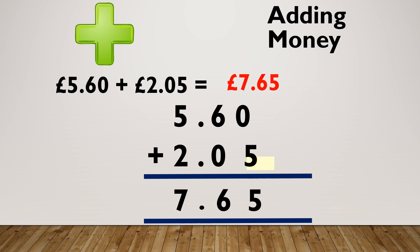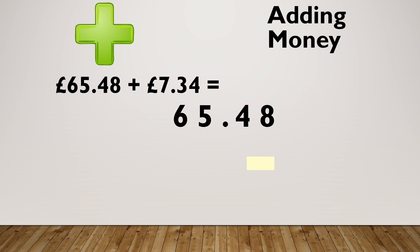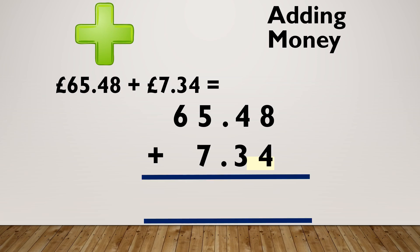Let's look at another example: £65.48 plus £7.34. Again I'm going to line everything up so that my decimal points are in line — my £10s, my £1s, my decimal point, my 10 pences and my pennies.